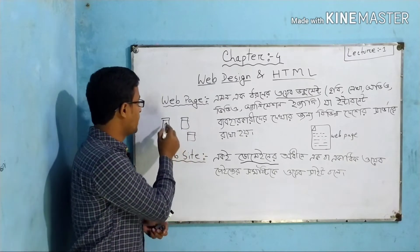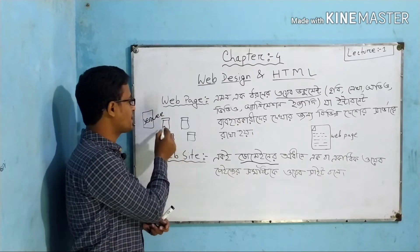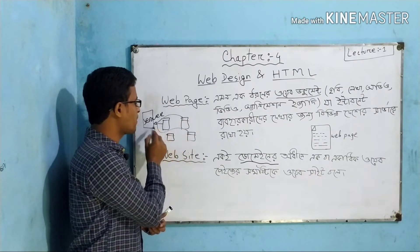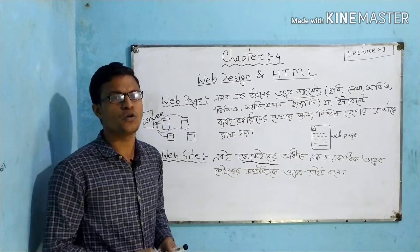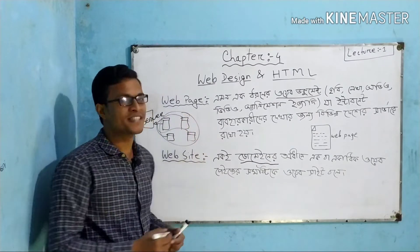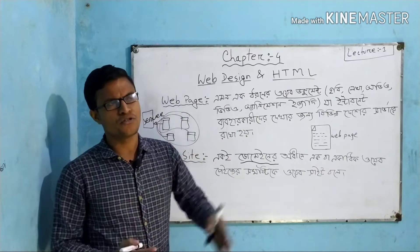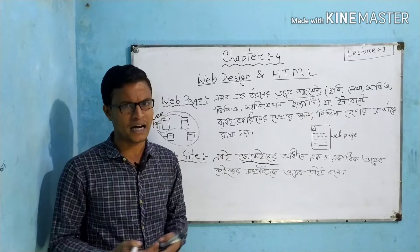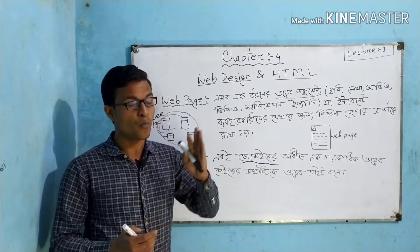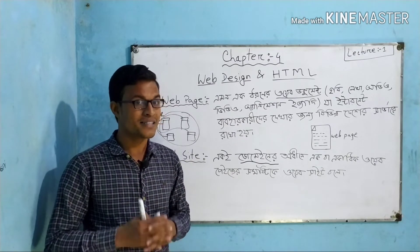If you have a server, you will be able to run a page with a name and you will use a web page. So, if you have a server to run a page, you will use a website and a web page. And if you have a web page, you will use a website. So, if you have a document, you can use a web document, you can use a web page. And this web page is called a web page and there is a domain.